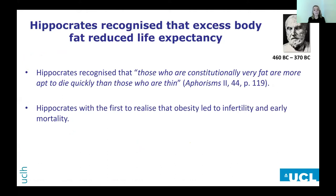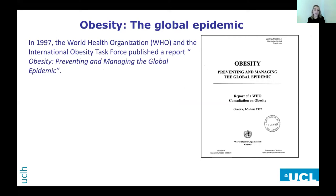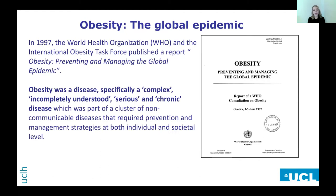Obesity isn't a new problem. Hippocrates was the first to realise that people who were very fat were more apt to die quickly than those who are thin, and he also recognised that obesity led to infertility and early mortality. It wasn't until 1997 that the WHO set an international obesity task force, generating a report entitled 'Preventing and Managing the Global Epidemic.' In that report they stated obesity was a disease — a complex, incompletely understood, serious and chronic condition — needing prevention and management strategies at both the individual and societal level. I would argue we've made very little progress since 1997.